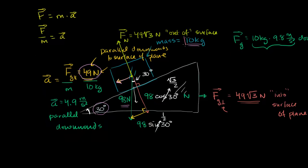In the last video, we had a 10 kilogram mass sitting on top of an inclined plane with a 30 degree angle. In order to figure out what would happen to this block, we broke down the force of gravity on this block into the components that are parallel to the surface of the plane and perpendicular to the surface of the plane.